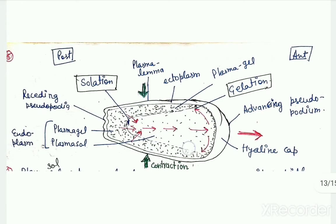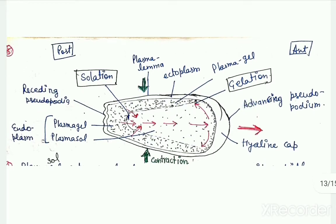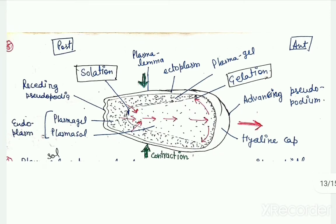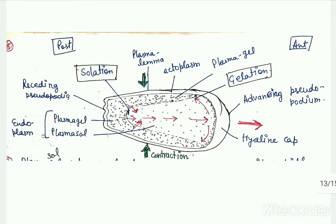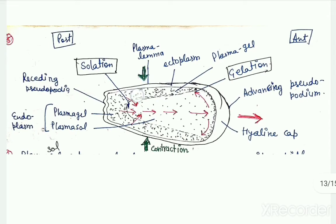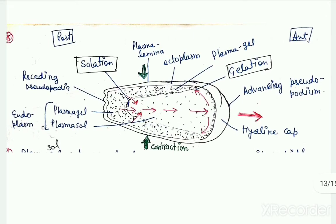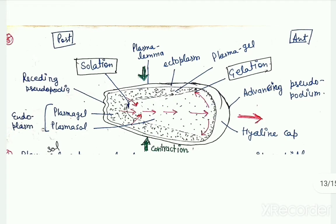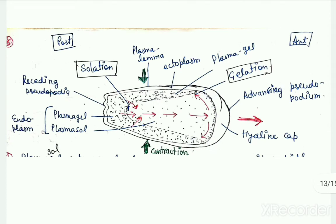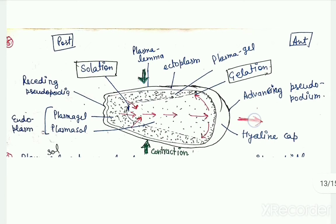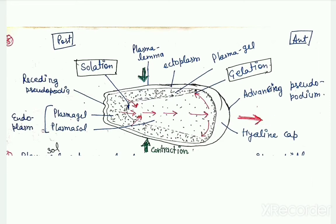The other process is solation, which occurs at the posterior end of the pseudopodium. Then this plasma gel tube undergoes contraction, and due to this forward movement of plasma sol, the pseudopodium continuously keeps moving forward.